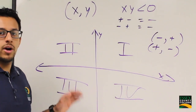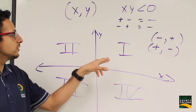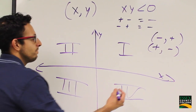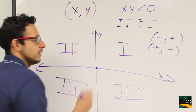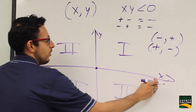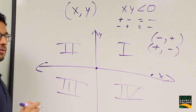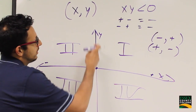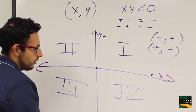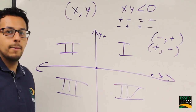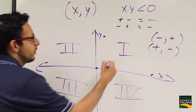We need to go through each quadrant and check the signs of x and y. In quadrant 1, to the right of the origin x is positive, to the left x is negative, above the origin y is positive, and below y is negative. So in quadrant 1, x and y are both positive.